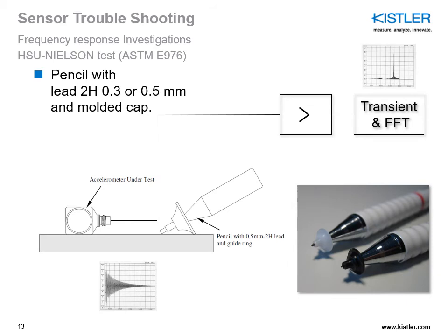The pencil break test, also called the HSU-Nielsen test per ASTM E976, is familiar from structure-borne noise measurement and consists of breaking the pencil lead. The bandwidth of this test runs to about 10 MHz. The next slide demonstrates an application of this test to characterize the frequency response in three directions of a triaxial sensor — both to show its capabilities and to check that the sensor is still functional in all three directions.